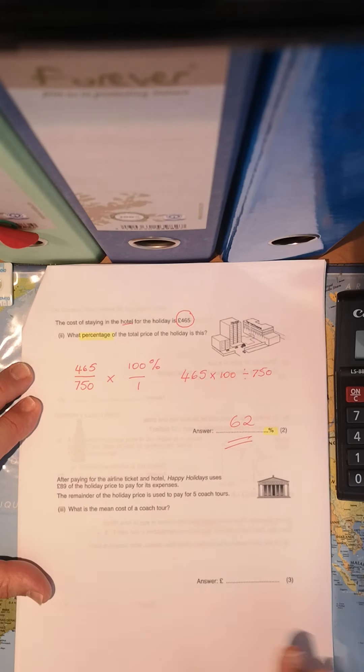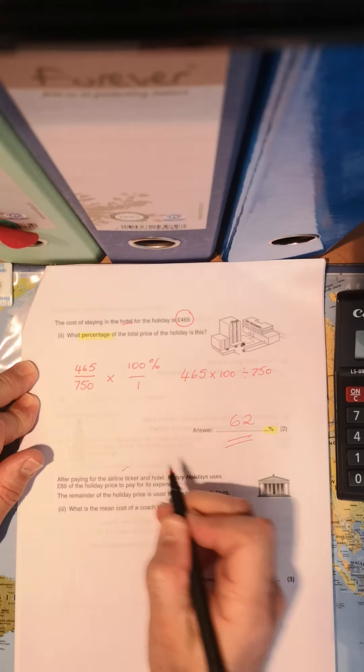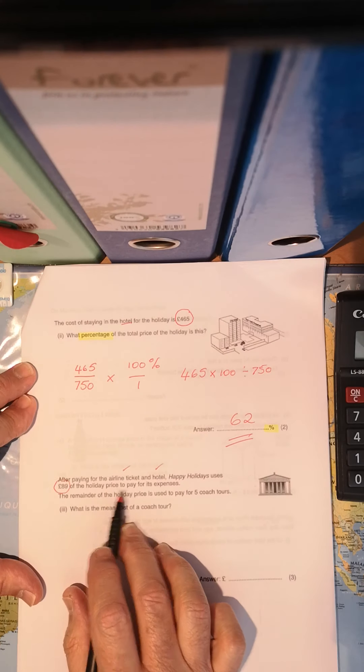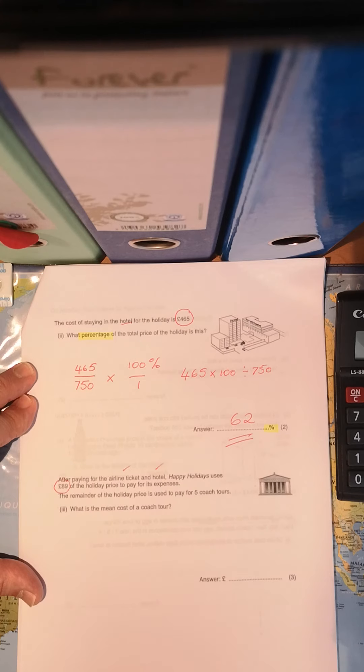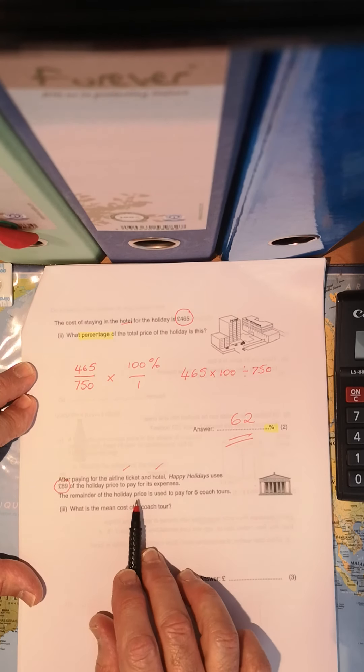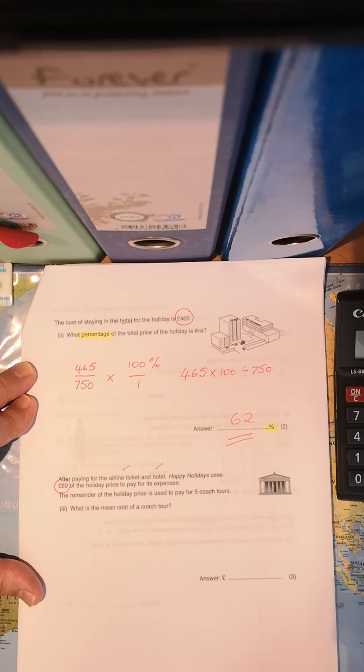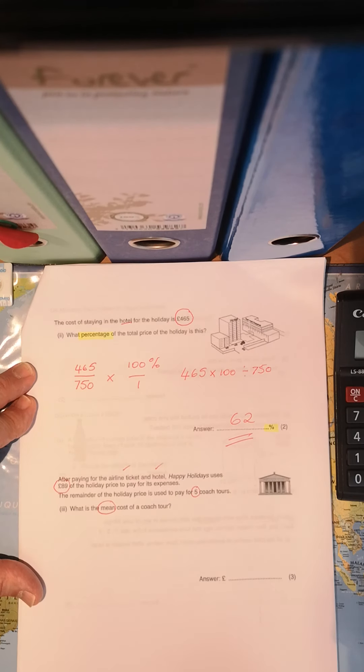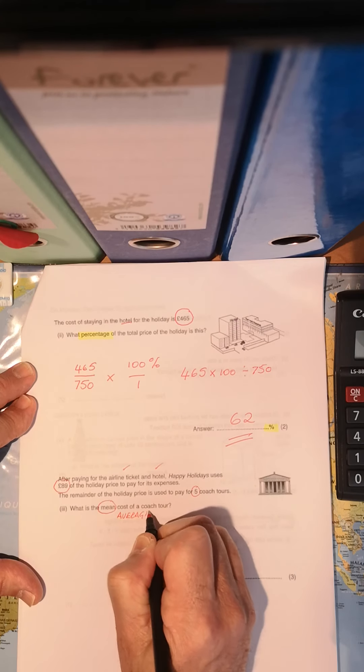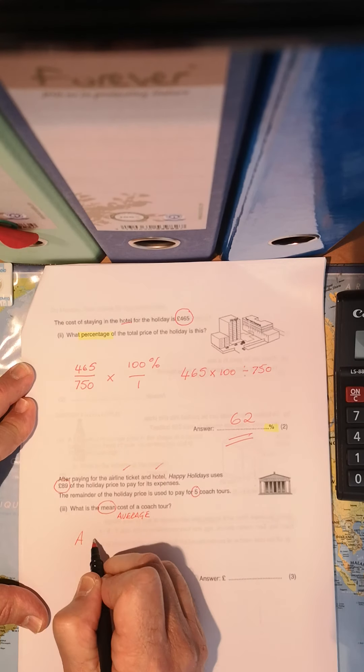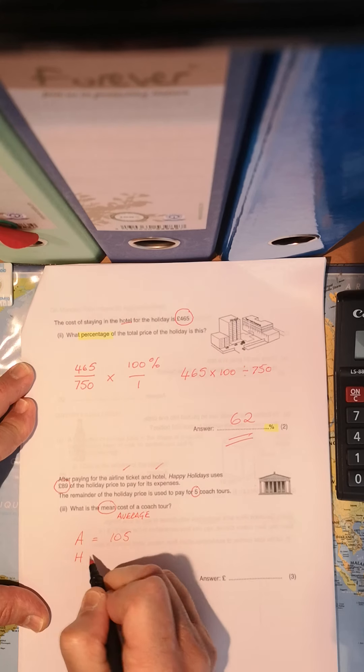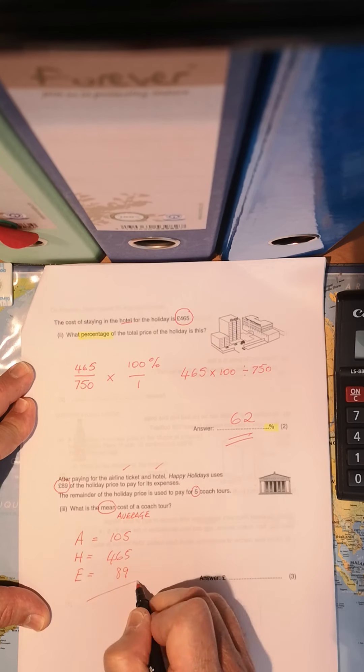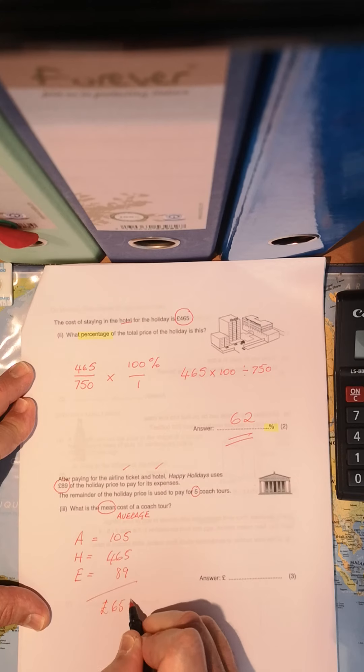Next question. After paying for the airline ticket, we've done that. We've paid for the hotel. Happy Holidays uses 89 pounds of the holiday price to pay for its expenses. So you've got to subtract 89 from the full total. And the remainder, whatever's left over, is used to pay for five coach trips. What is the mean cost of a coach, meaning the average?